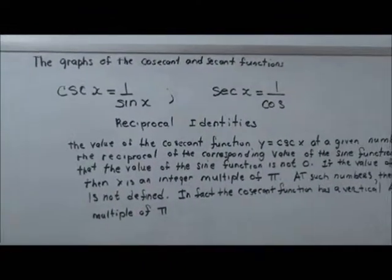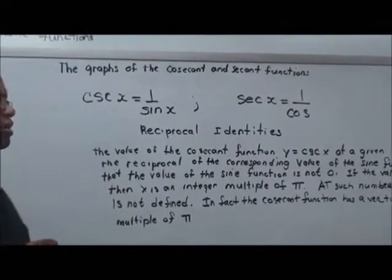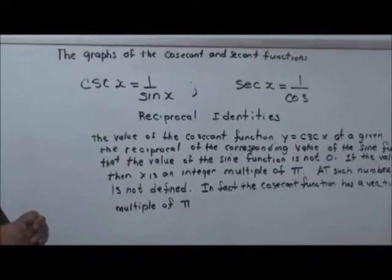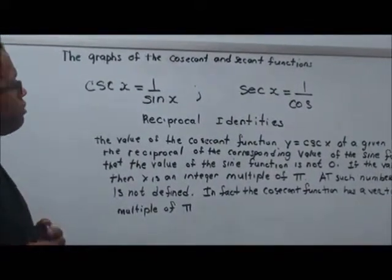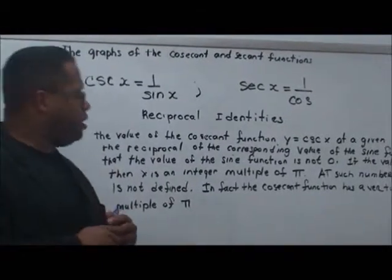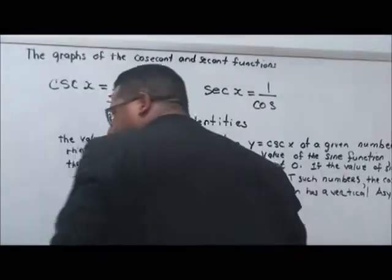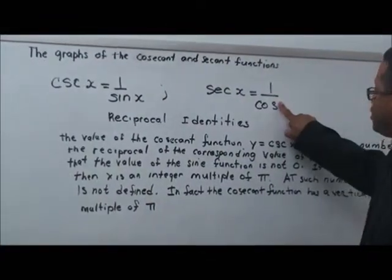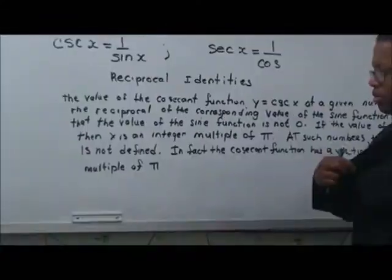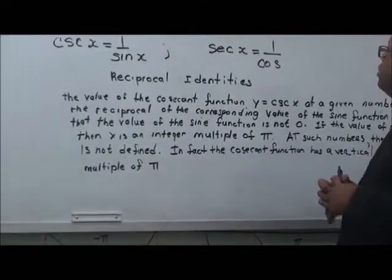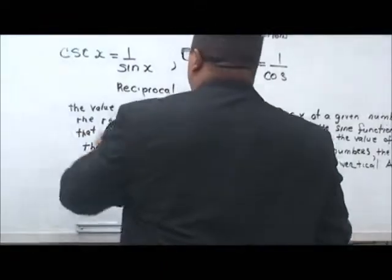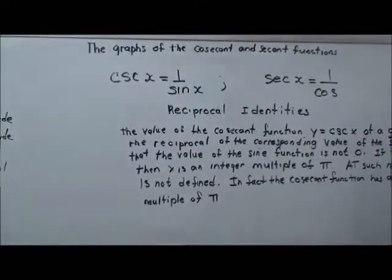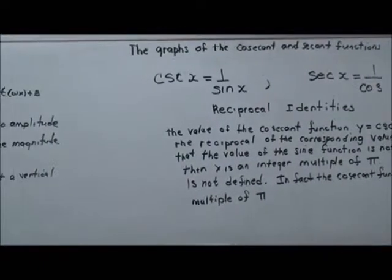Now, you remember, these are reciprocal identities. So cosecant x is equal to 1 over sine x, and of course secant x is equal to 1 over cosine x. But the value of the cosecant function, y equals cosecant x at a given number,